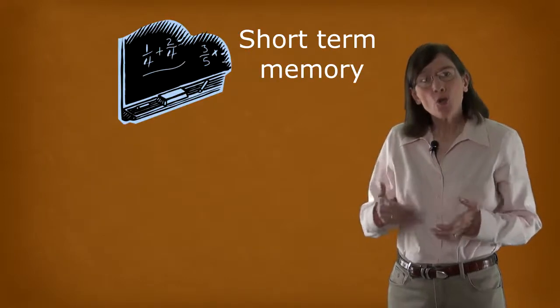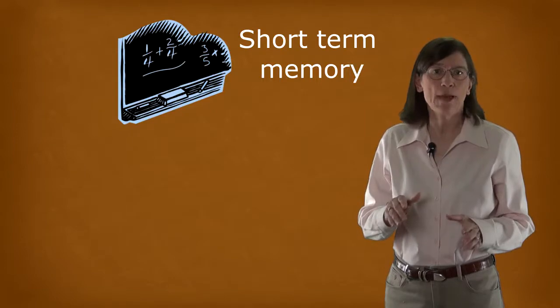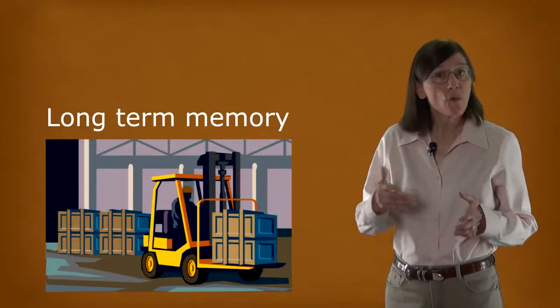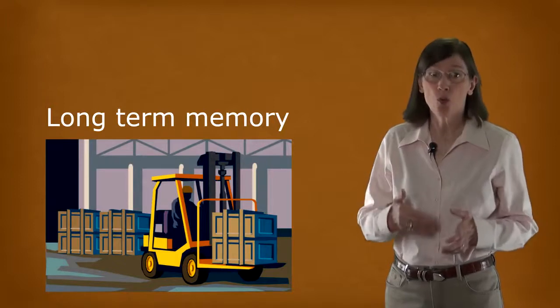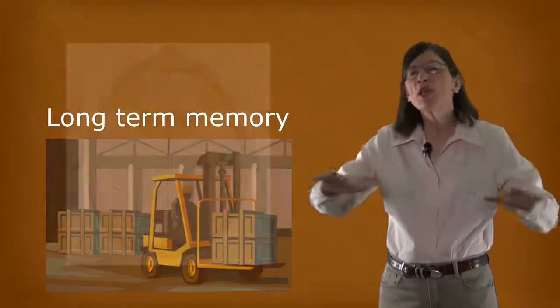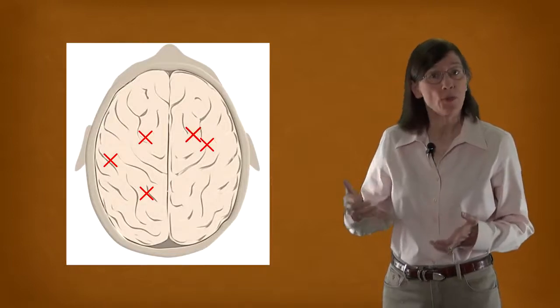So we know that short-term memory is something like an inefficient mental blackboard. The other form of memory, long-term memory, is like a storage warehouse. And just like a warehouse, it's distributed over a big area. Different kinds of long-term memories are stored in different regions of the brain.